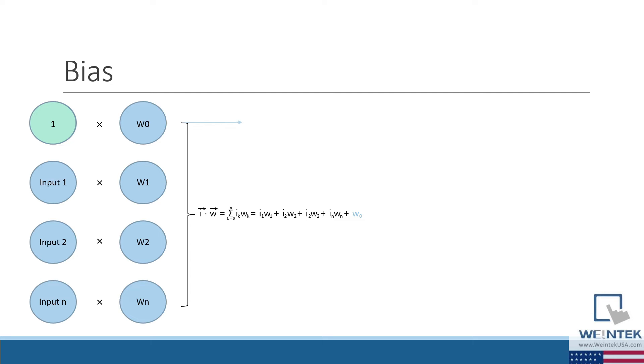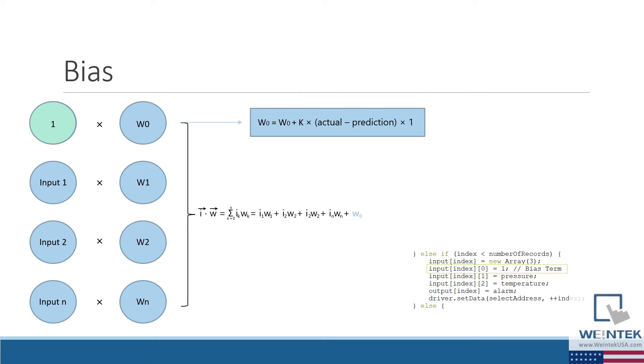And like the other weights, this is a learned parameter, meaning that it will adjust if the prediction made by the perceptron is incorrect. However, unlike the other weights, the amount that the bias weight adjusts is only dependent on the product of the learning rate and the difference between the actual output and the prediction.